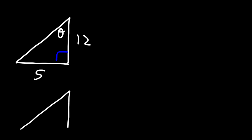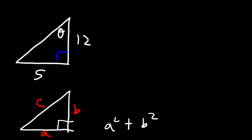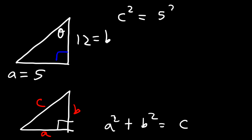Let's try another example with a right triangle where we're given 2 of the 3 sides. The angle theta is here. First, we need to find the missing side using the Pythagorean theorem: A² + B² = C². We're looking for the hypotenuse C. With A = 5 and B = 12: C² = 5² + 12² = 25 + 144 = 169. Taking the square root, C = 13. So the hypotenuse is 13.